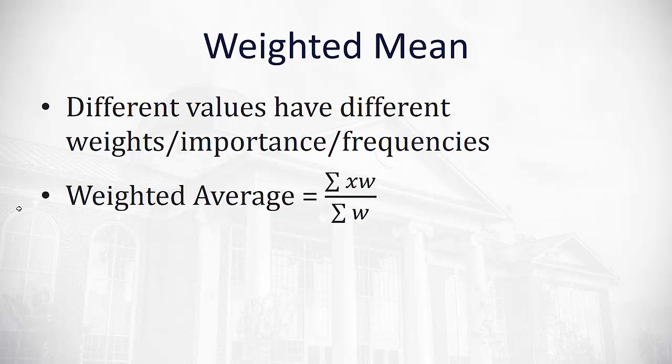One more thing I want to talk about is what's called a weighted mean. A weighted mean gives different values different weights, or importance, or frequencies. The formula for a weighted average is to multiply the individual data value, x, by w, its weight. And then we divide by the total weight that we have in our situation.